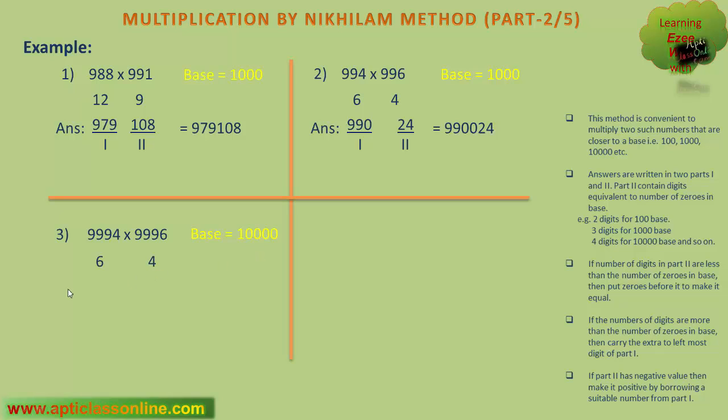So we can write down the answer, as we have done in the earlier examples. In the first part, we will write the difference of 9994 and 4, or 9996 and 6, which is 9990. This is the first part of the answer. The second part, which has to be written in the continuation, is the multiplication of 6 and 4, that is 24. This is the second part.